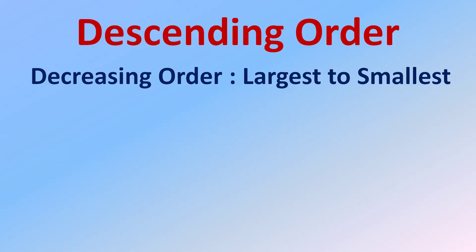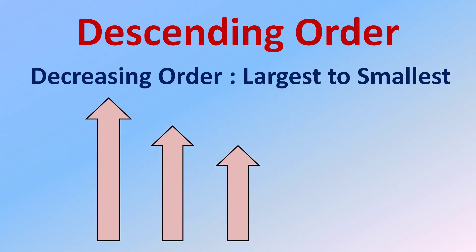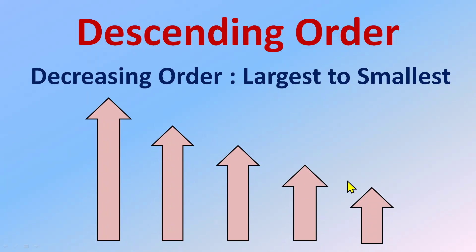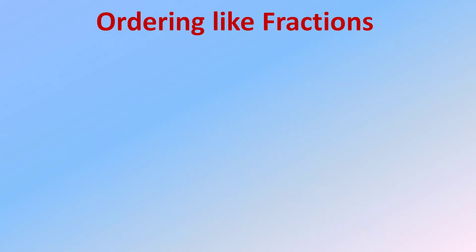Now, descending order — also known as decreasing order — is largest to smallest, moving from largest to smallest, or big to small. Looking at it visually, you can see that this is the largest, moving towards the smallest. So this is descending, or decreasing, order.